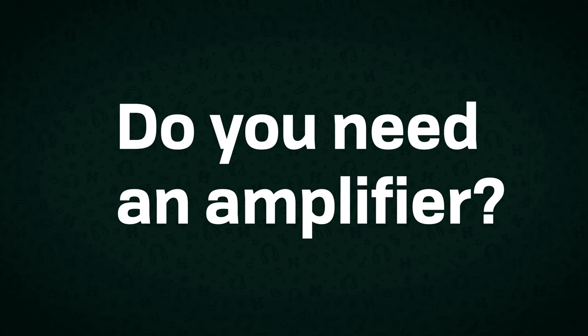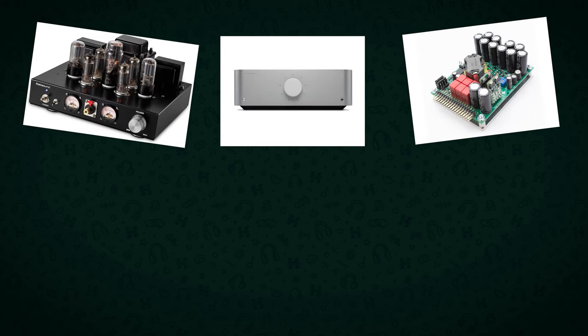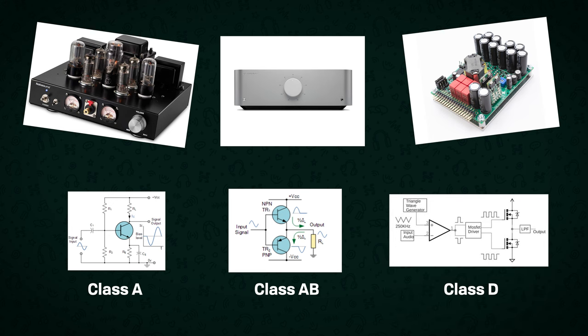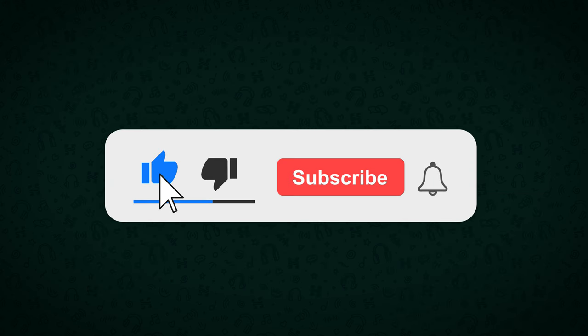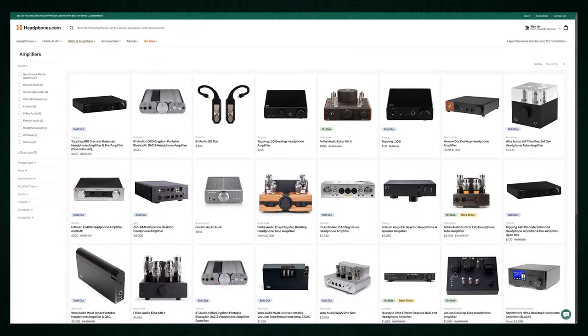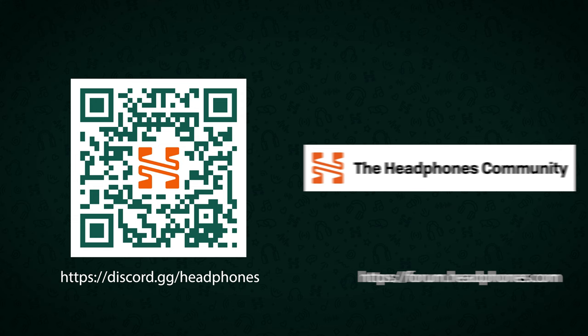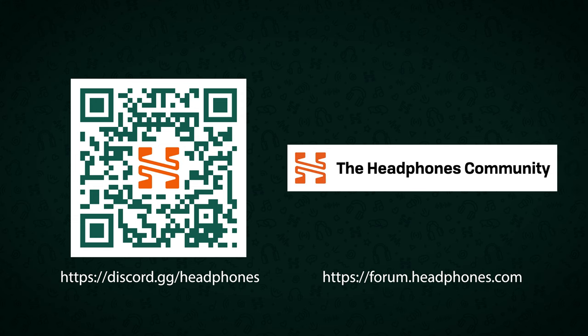So do you need an amplifier? Yes — without one you'll have issues, but there are a lot of different amplifiers out there and many different ways to make an amplifier. What exactly is the difference between a Class A, Class AB, or Class D amp? Click that subscribe button to be notified when part three of this series comes out. And if you need an amplifier for yourself, head over to Headphones.com where you can check out the range of available options and buy with confidence thanks to their 365-day return policy. If you've got any questions related to amplifiers, headphones, DACs, music, or any other type of gear, head over to the Headphones.com Discord server or forum. Until next time, thanks for watching.